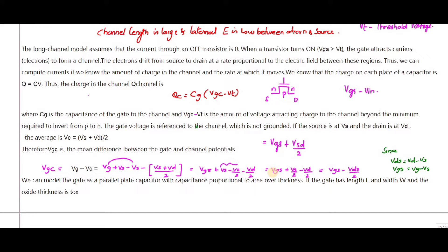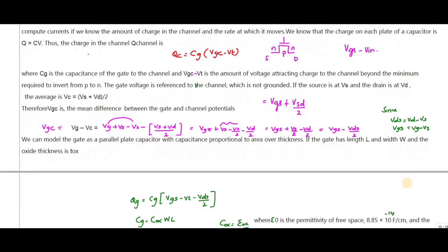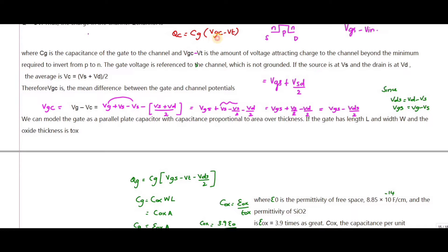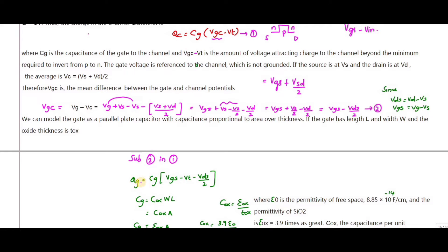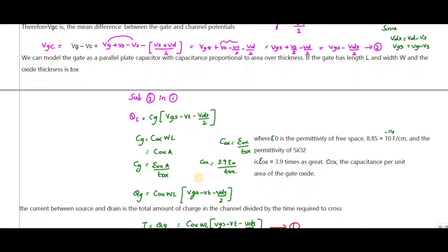We can model the gate as a parallel plate capacitor with capacitance proportional to its area and inversely proportional to its thickness. If the gate has length L, width W, and oxide thickness t_ox, the gate capacitance C_G = C_ox × W × L. Substituting equation 2 into equation 1, Q_channel = C_G × (V_GS − V_DS/2 − V_T).